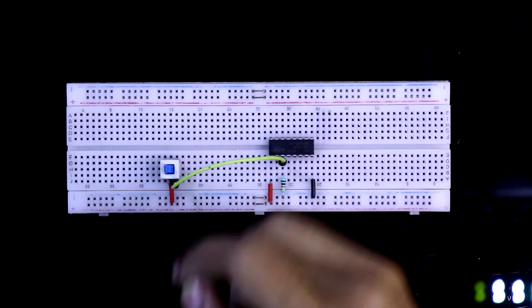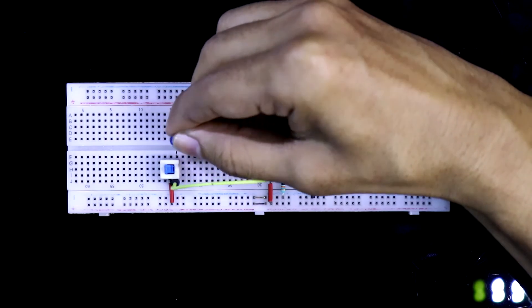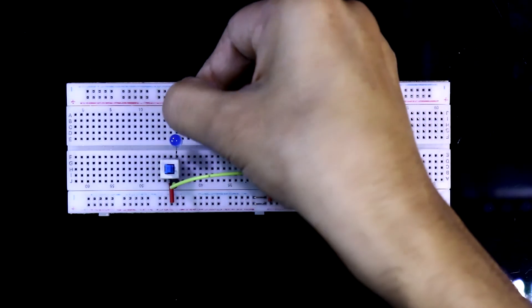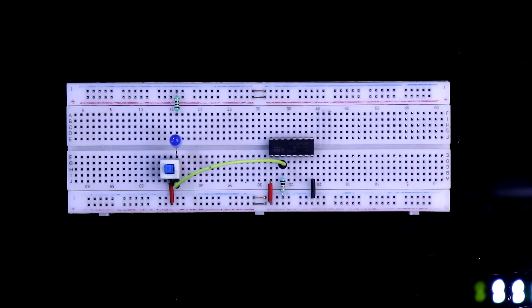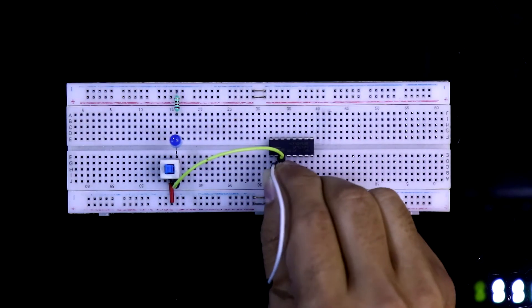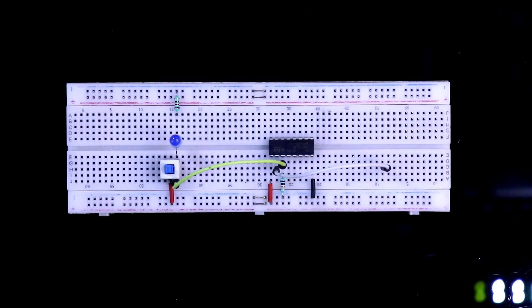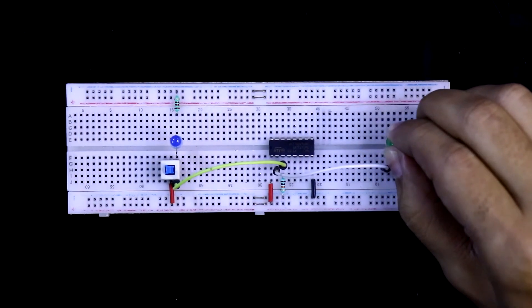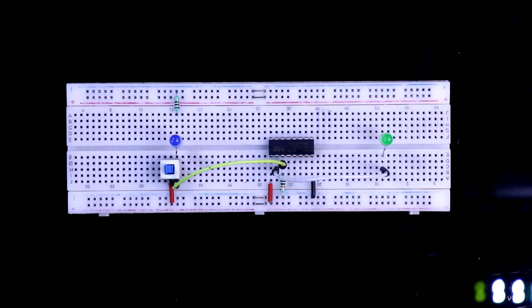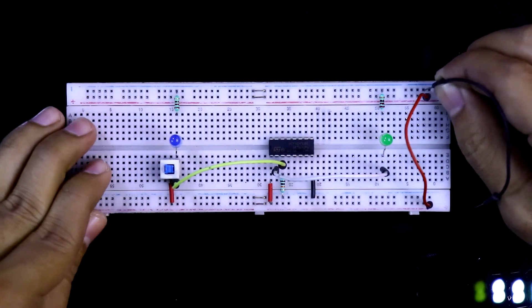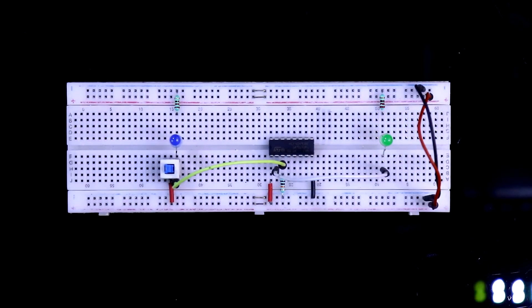And in the same side, we are connecting the LED. The negative pin of the LED is connected to the ground. Pin number 2 is output. And I am connecting it here. Positive pin of the LED is connected with this. And negative pin is connected to the ground. Connecting both the positive and negative rails. So, this is how we have completed our connection.